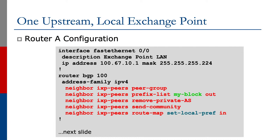If we look at the Router A configuration, we can scale the example we saw earlier. We can set up a peer group called IXPPeers. In that, we put in our outbound prefix list that lets our address block out. We strip out private ASes. We could send the BGP community attribute if required, and we can also set up a route map to set local preference for the prefixes that we hear from the Exchange Point peers. This is a very common type of peer group used for operators peering at an Internet Exchange Point.